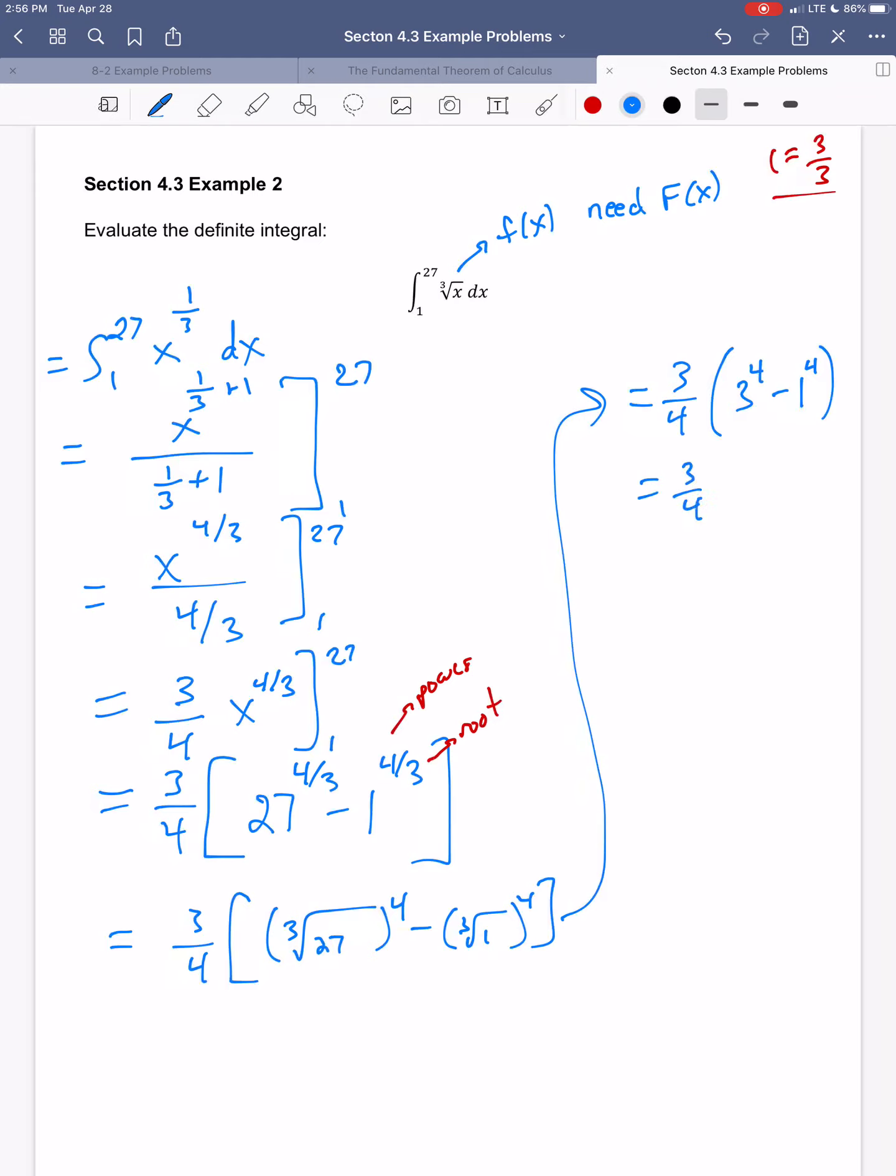So I get three-fourths. 3 times 3 times 3 times 3 is 81. 1 to the fourth is just 1. 81 minus 1 is 80.